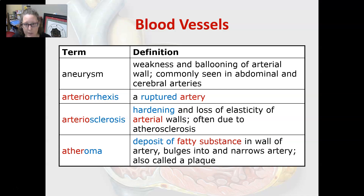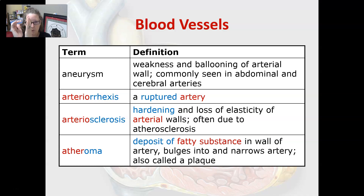Moving into blood vessel pathologies — an aneurysm is a weakness and ballooning of an arterial wall. It is commonly seen in the abdominal and cerebral arteries. The ballooning part grows progressively weaker and can eventually rupture, causing massive internal blood loss and potentially rapid death.